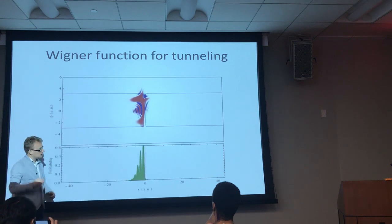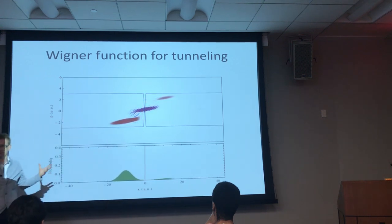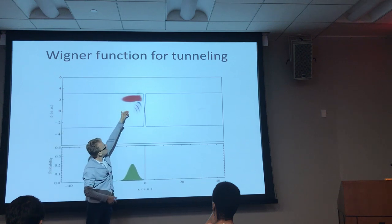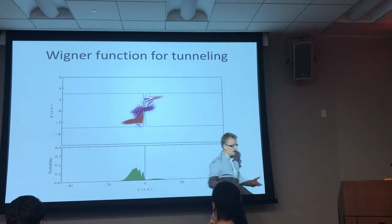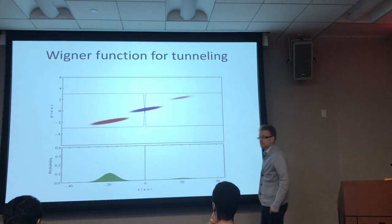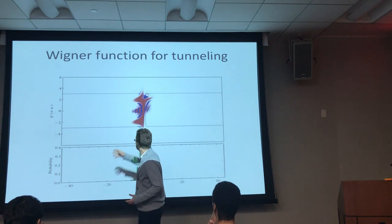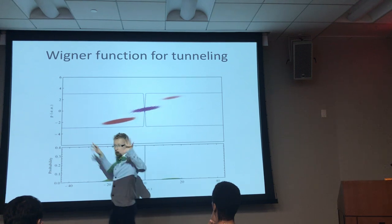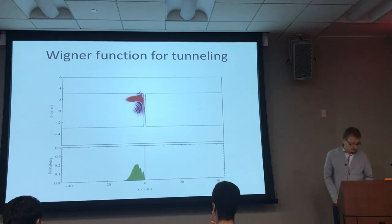Originally your wave packet is Gaussian with positive momentum. It hits the barrier, most of it reflects, but a little bit goes through. You can see splashes of negative and positive values - red is positive, blue is negative. These fringes and negative values in phase space are a consequence of quantum mechanics - that's a Schrödinger cat state. It's a signature that the reflected portion of the wave packet has a locked phase relationship with the portion that went through. That's a signature of quantum coherence. Decoherence washes this out.